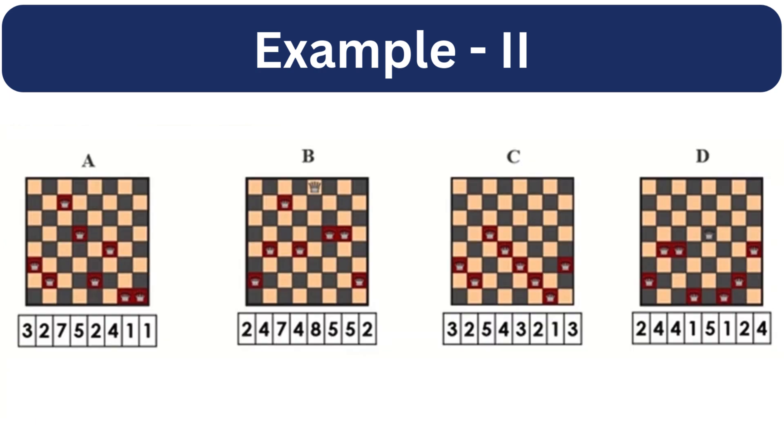So here is our initial population. We represent each individual as a list of 8 numbers. Each number in the chromosome represents the row position of a queen in the corresponding column of that chessboard.